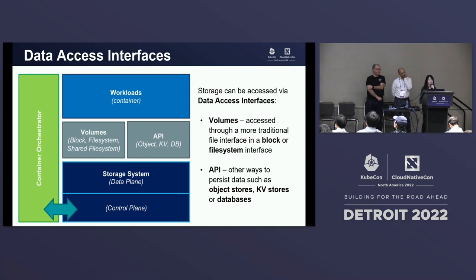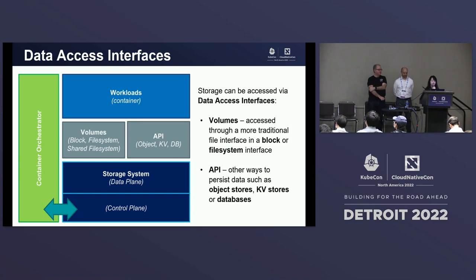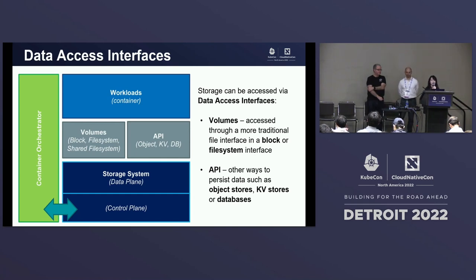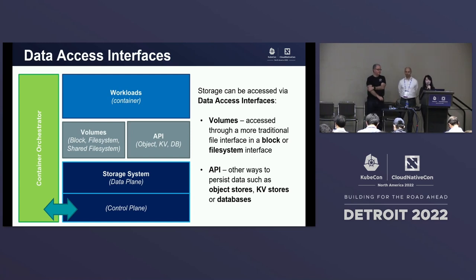Now let's look at data access interfaces. Workloads and containers consume storage systems through data access interfaces. There are two types: one is volumes — the interface supported by container orchestration systems, including block and file systems. The other type is APIs — here we refer to object stores, key-value stores, and databases.